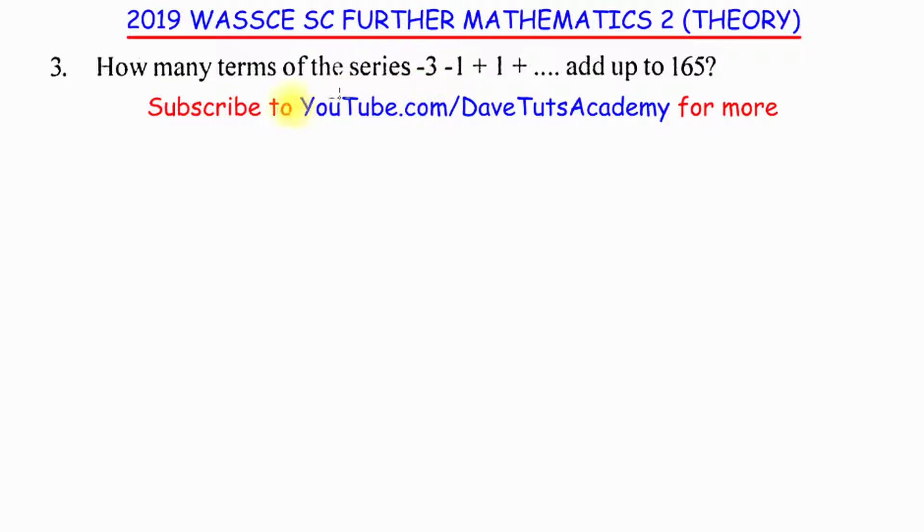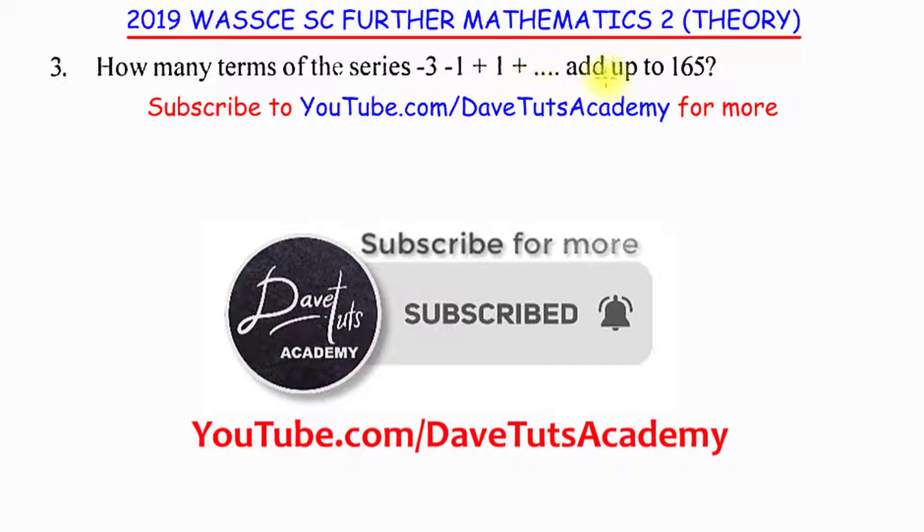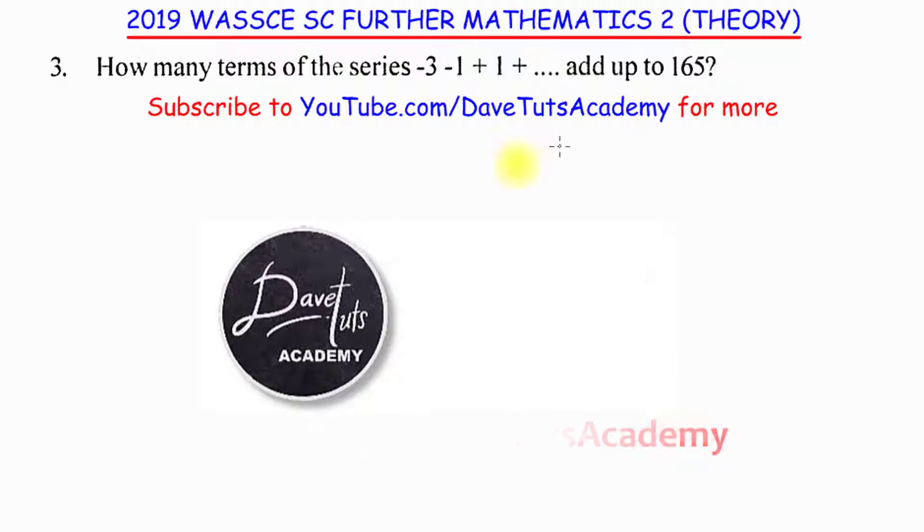In this question on arithmetic progression, we are told how many terms of the series minus 3, minus 1, plus 1 and so on will add up to 165.